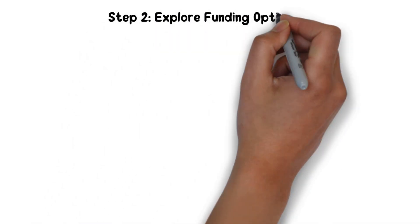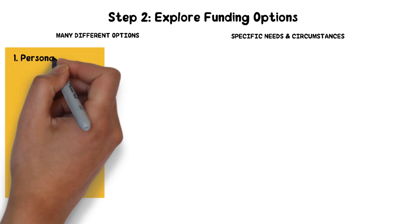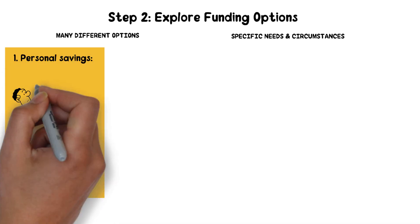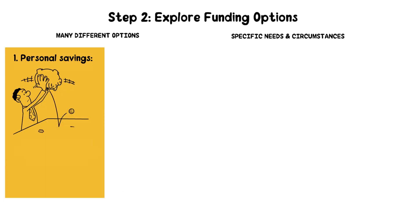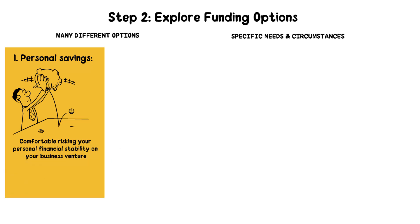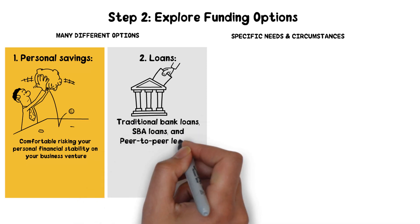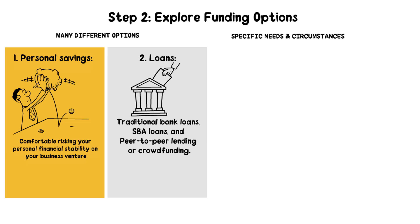Step 2: Explore funding options. There are many different options available for funding your business, and the right choice will depend on your specific needs and circumstances. Some common funding options include: personal savings — if you have personal savings or assets you can use to fund your business, this can be a good option, though it's important to consider whether you are comfortable risking your personal financial stability. Loans — there are a variety of loan options available to small businesses, including traditional bank loans, SBA loans, and alternative lending options such as peer-to-peer lending or crowdfunding. Each option has its own set of terms and requirements, so it's important to do your research and compare options to find the best fit for your business.